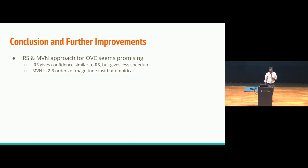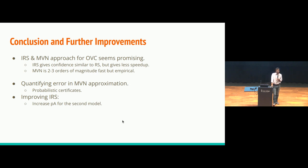In conclusion, we have developed these two techniques. Our modified incremental randomized smoothing gives us confidence which is similar to the randomized smoothing, but it gives us less speedup. Multivariate normal gives us a lot of speedup, but it's empirical in some sense. As a further improvement, we would like to quantify the error in our multivariate normal approximation because there is no real reason why the output of CLIP should be a multivariate normal. If you have any ideas, please discuss it with me offline. That would be great. The second thing is that in our incremental randomized smoothing, since we have two prompts, it is possible that for the second prompt also, the probability of the class can be more than the previous prompt. We have some ideas on this. We are working on that. That's all from me. If you have any questions. Thank you.